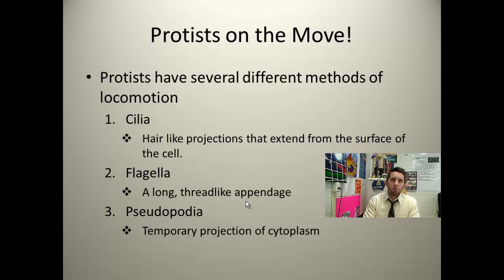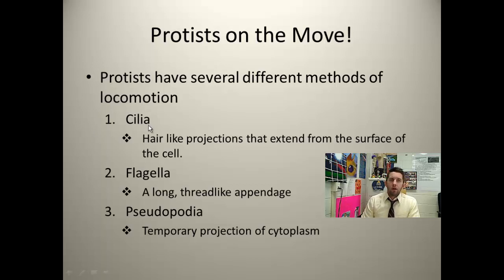How do we tell them apart? We've obviously made some great strides with biochemistry and DNA research, so we're able to tell very accurately what's related to what in terms of DNA relatedness and DNA homology. But outwardly, you can classify protists by the way they move. Some move using cilia — hair-like projections on the cells that help them move along. Flagella is another method of locomotion, which is kind of a whip-like tail.